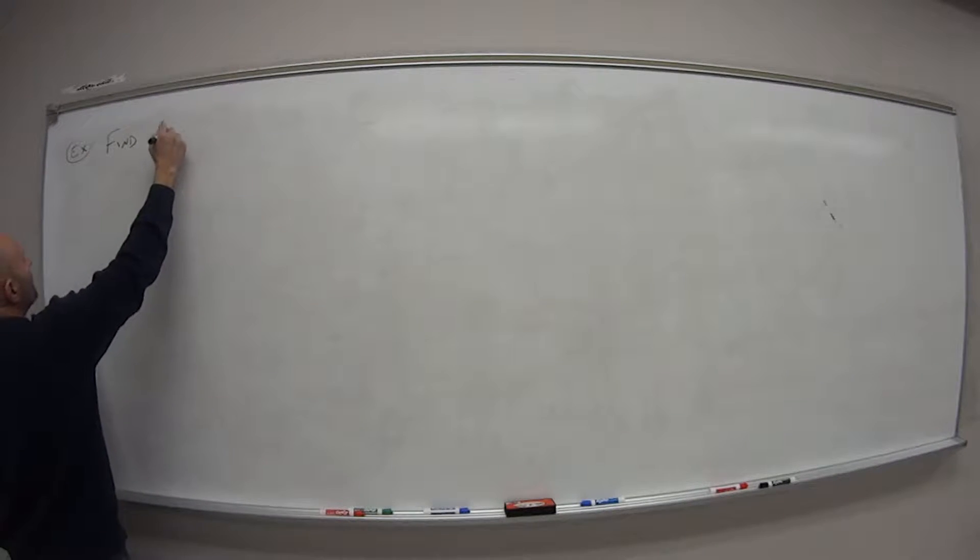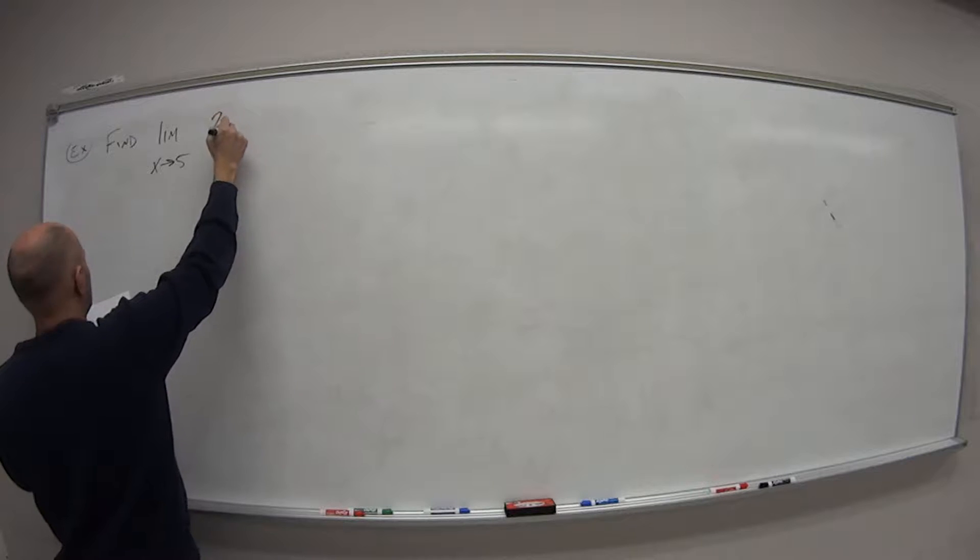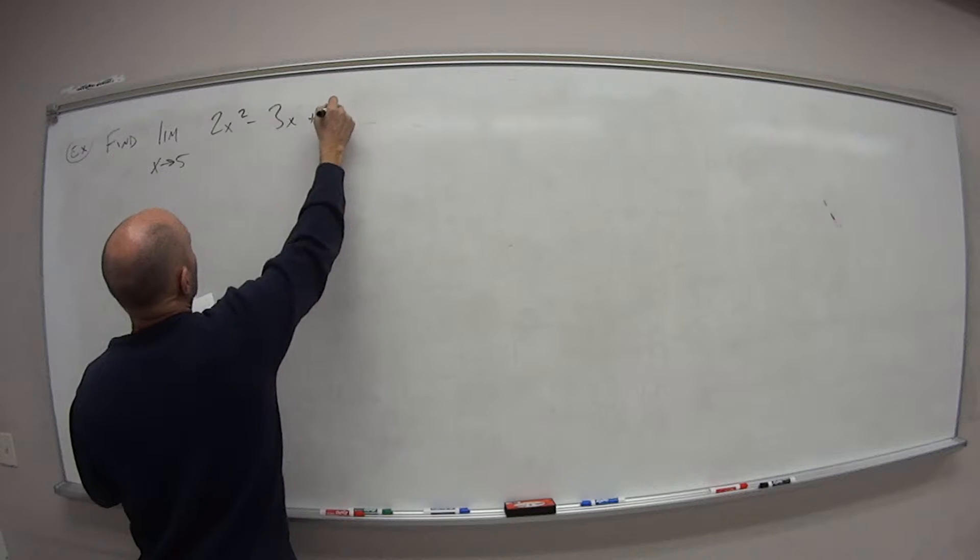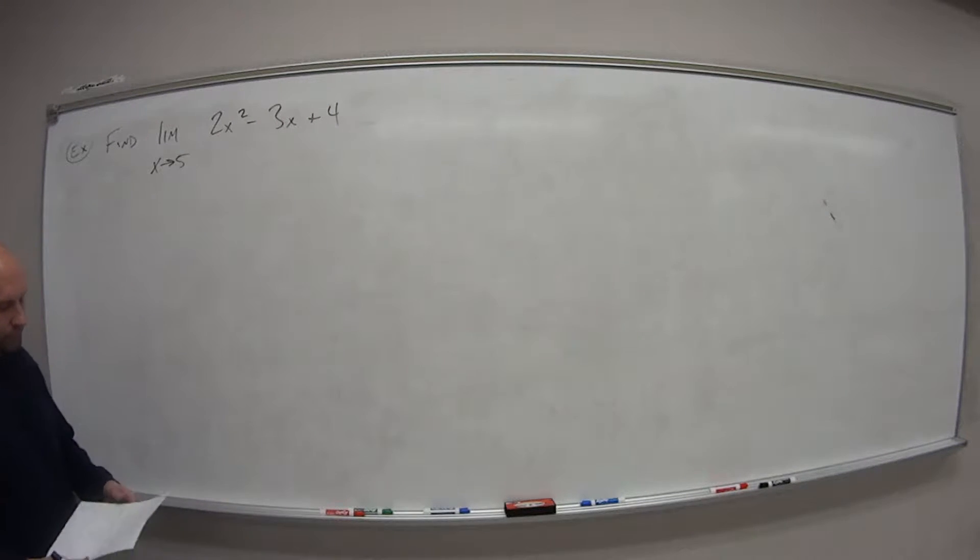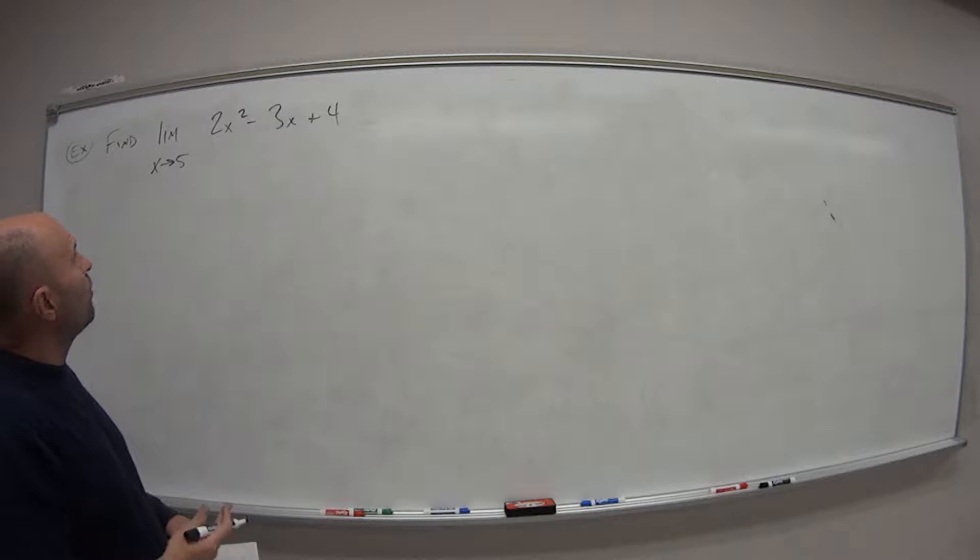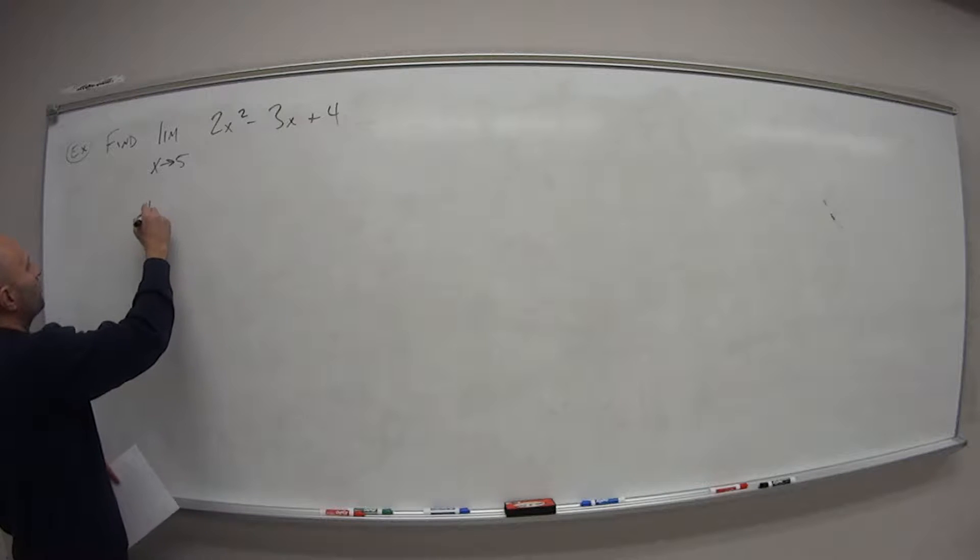The first example we're going to look at, we're going to be using these different laws that we looked at in video one. So we want to find the limit as x approaches five of the following: 2x squared minus 3x plus 4. So by law 1 and 2, which was the addition and subtraction, we can rewrite this guy as what?